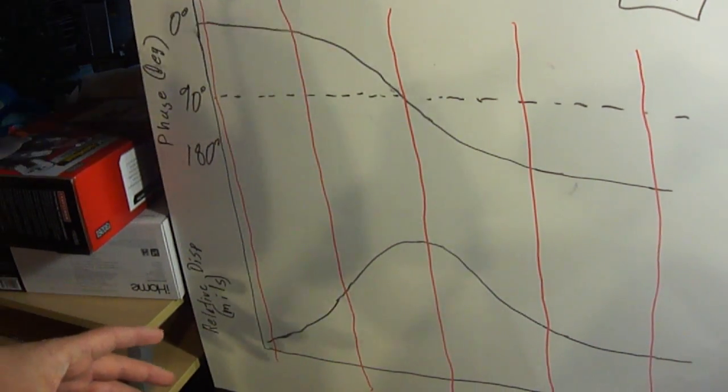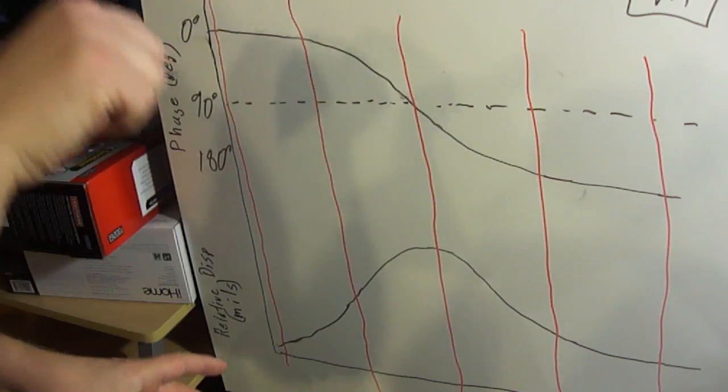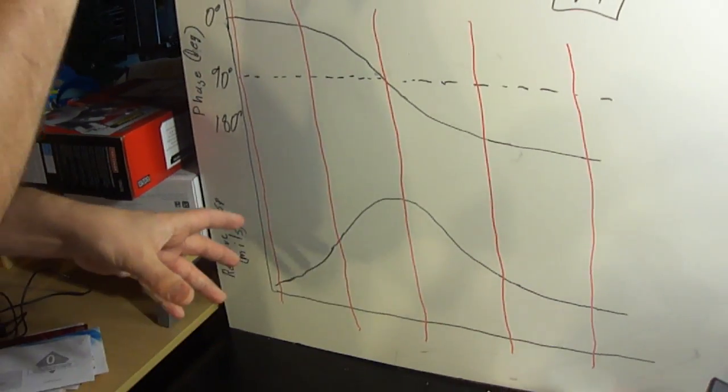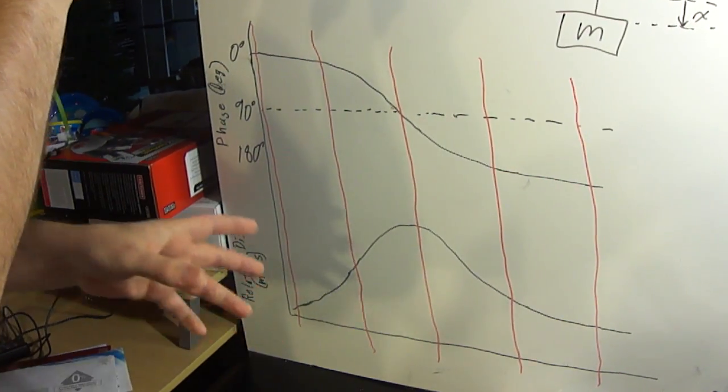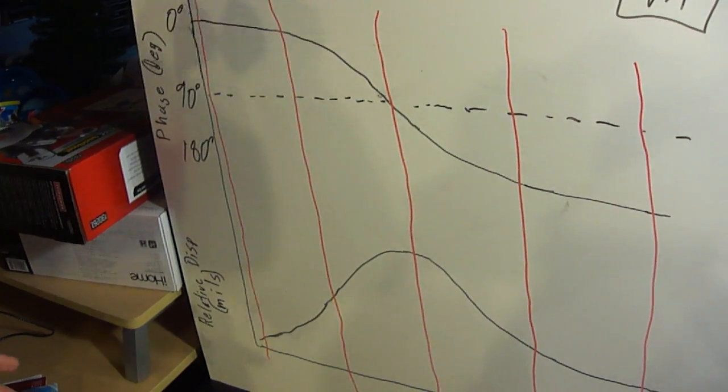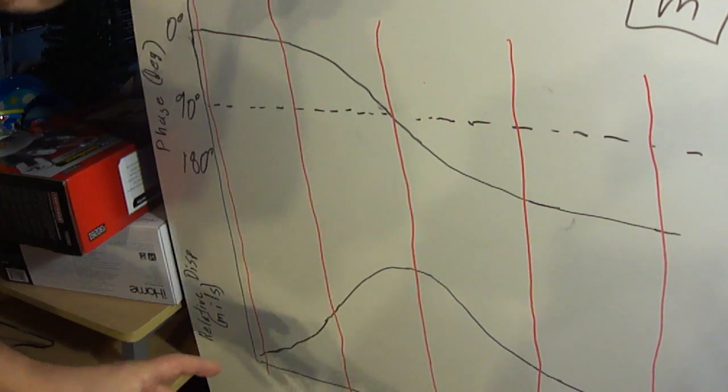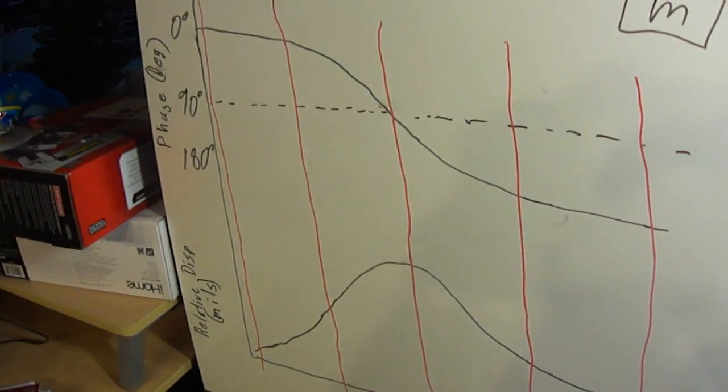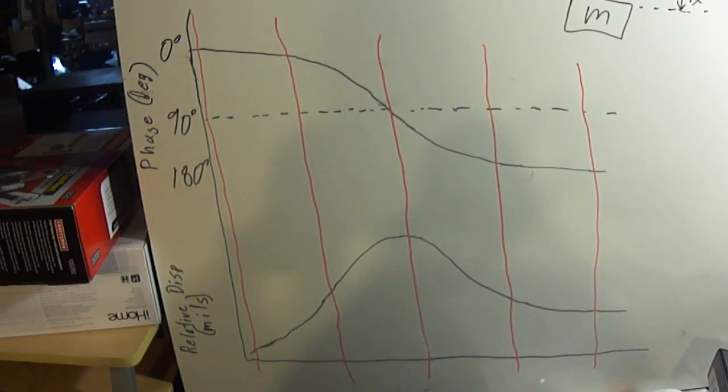So almost as if the input from my hand can't really translate into the output of the weight. It will stay with relatively less movement than before, and also the 180 degrees phase lag will be demonstrated as I expect the weight to move in opposite motion from my hand. So I'm going to go ahead and excite the system as fast as I can.